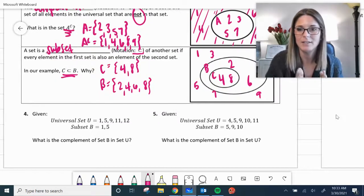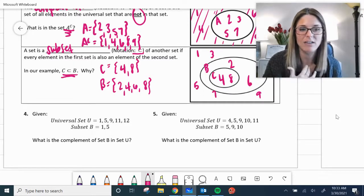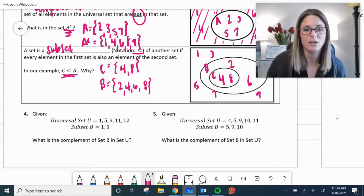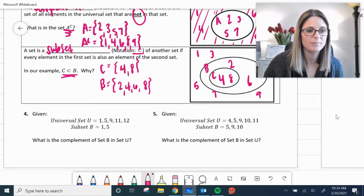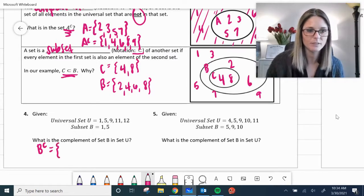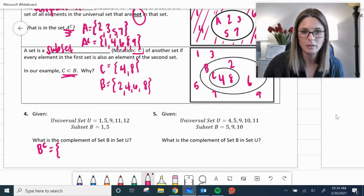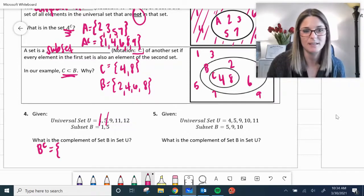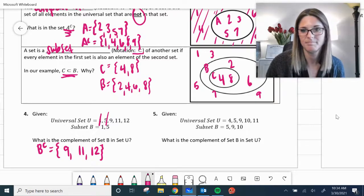You do have practice like this on delta math. So I've got two examples here to show you how that's going to work. This is pulled directly from delta math. It says, given the universal set U is 1, 5, 9, 11, 12, subset B is 1 and 5. What is the complement of set B in set U? So let's use complement this notation, B of C, or the complement of B. So if B is 1 and 5, 1 and 5, everything that's left, the complement, the ones that are not in subset B would be 9, 11, and 12. That simple.